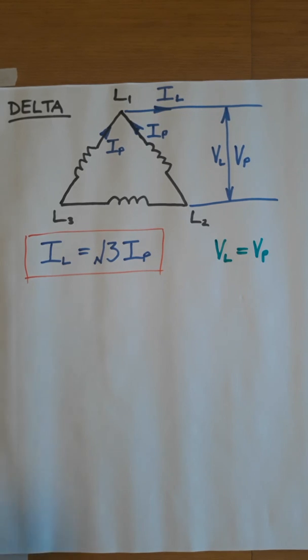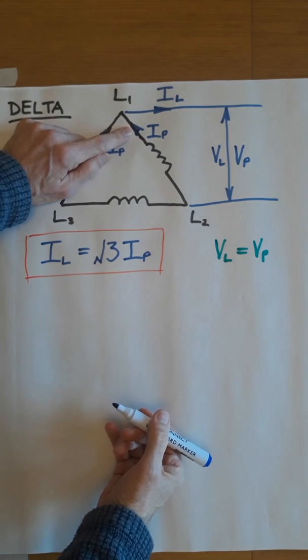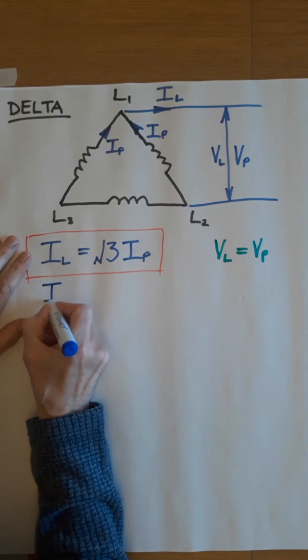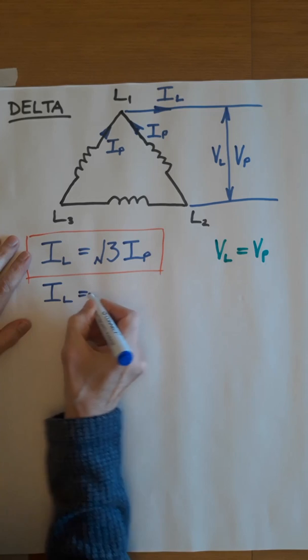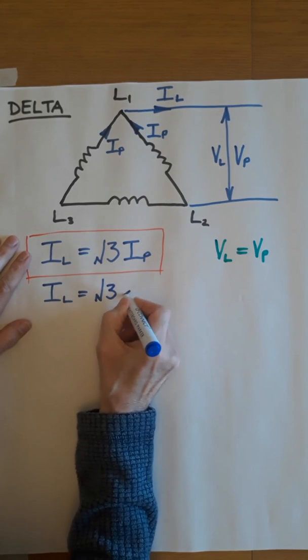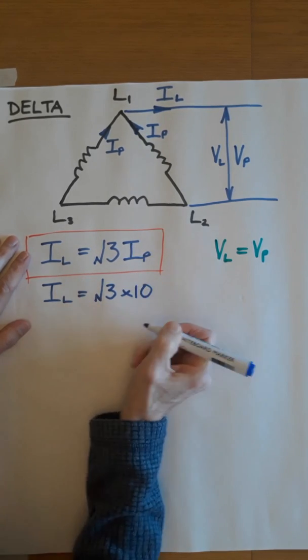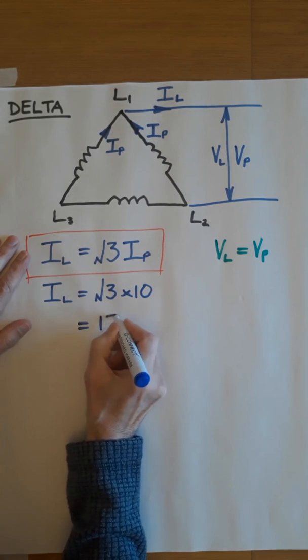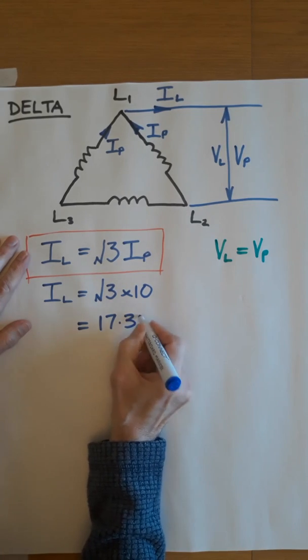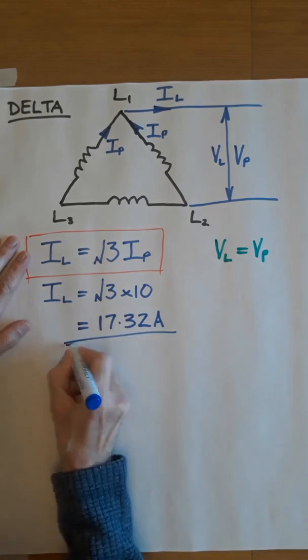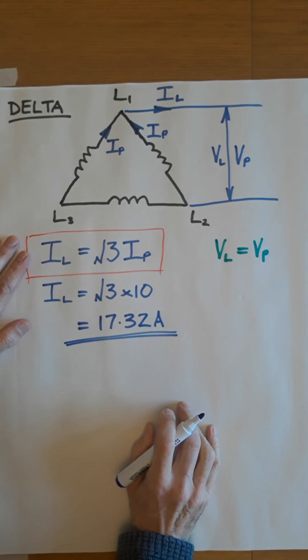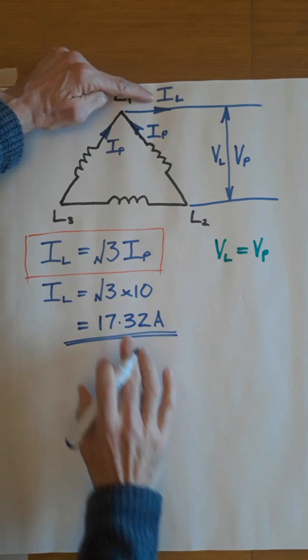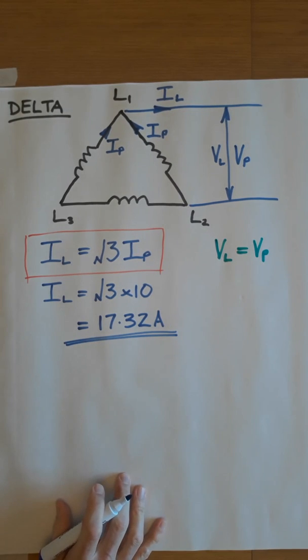So let's suppose that we have 10 amps as the phase current. Let's calculate the line current. IL is root 3 times 10. If you work that out in your calculator, you'll get 17.32 amps. So if we have a phase current of 10, the line current is 17.32. It's root 3 times bigger.